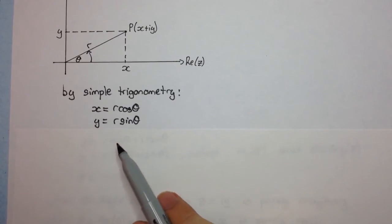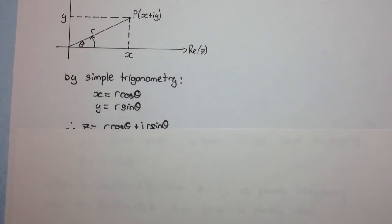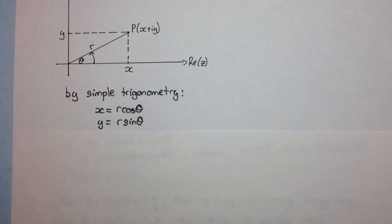And similarly, we can get y equal to r sine theta. So these are the polar coordinates of this complex number. You can think of it as a parametric representation.